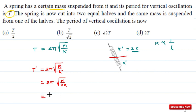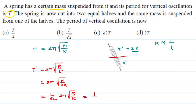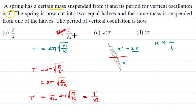The new time period becomes 1 upon root 2 times 2π under root of m upon k. But 2π under root m/k is nothing but capital T. Therefore the new time period equals T upon root 2. Option B is the correct one.